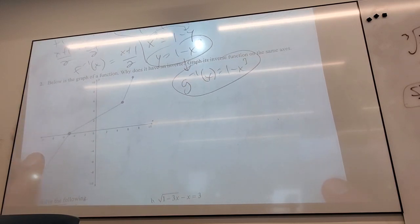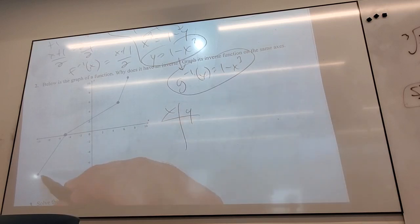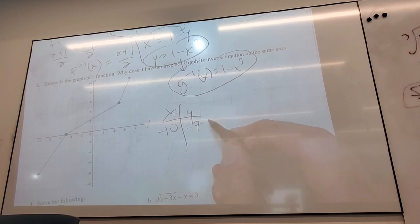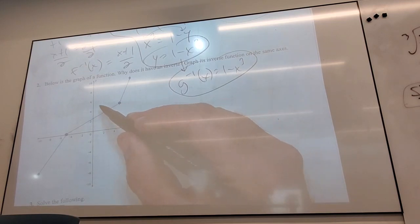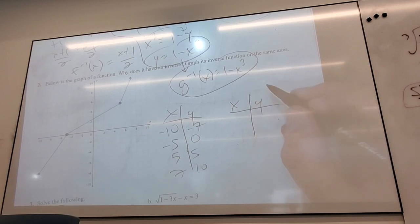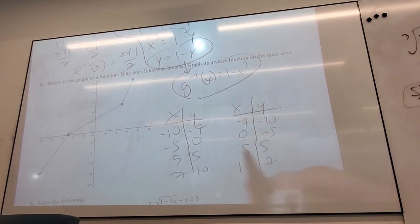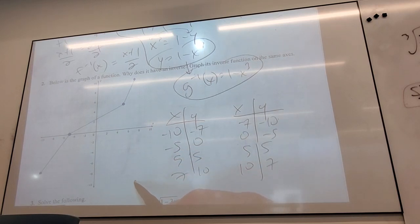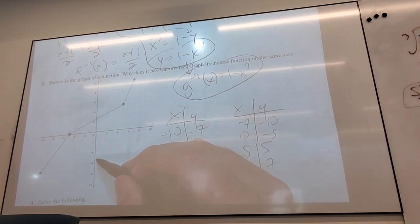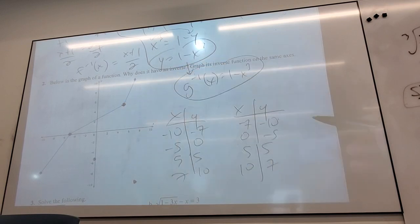Please don't fall into the trap of thinking you can eyeball this — you will make mistakes. The easiest way is to collect what the points are in the first place. The original points are: negative 5, 0; negative 7, negative 10; 0, negative 5; 5, 5; 10, 7. Wait — negative 7, negative 10. Let me redo that: negative 7, negative 10; 0, negative 5; 5, 5; 10, 7.